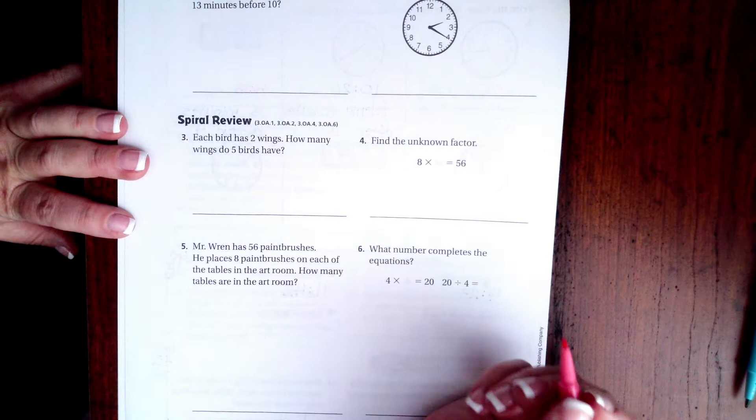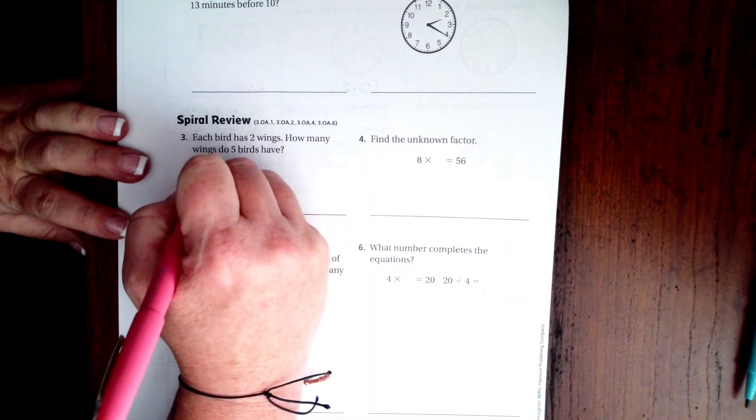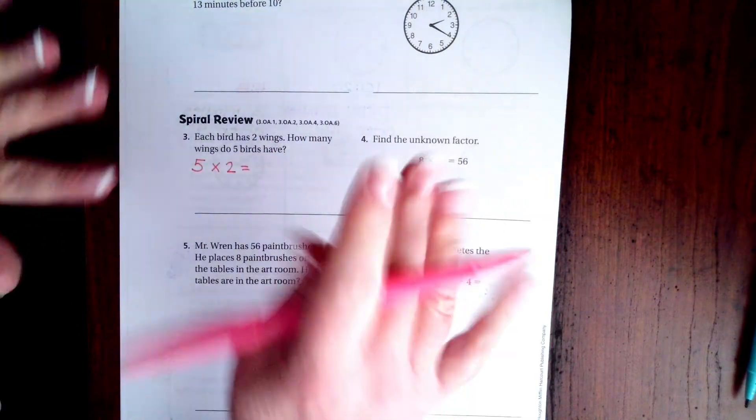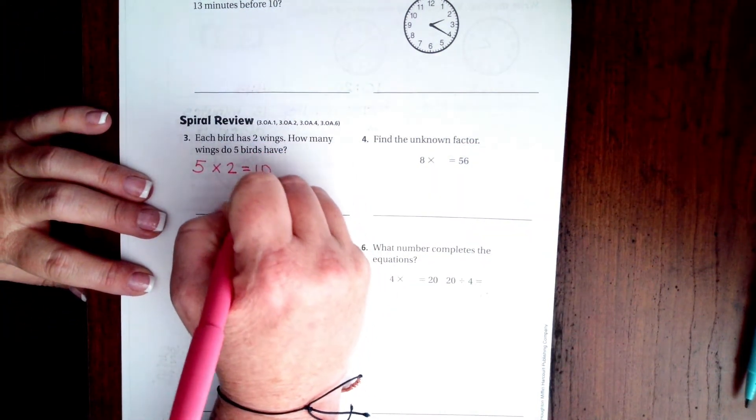This says each bird has two wings. How many wings do five birds have? Five birds each have two wings. Well, two sets of five is just 10, so 10 wings. Make sure we label.